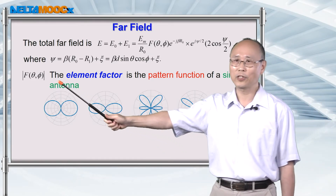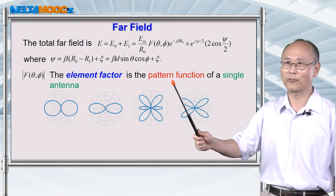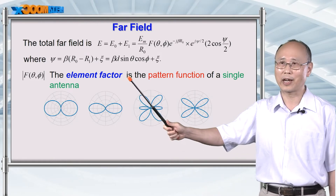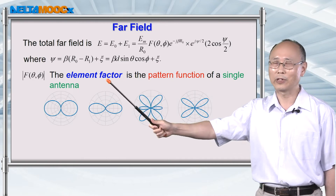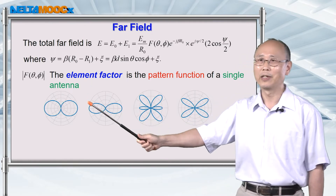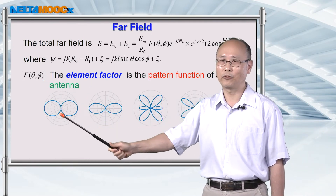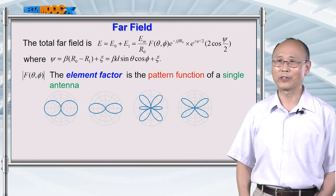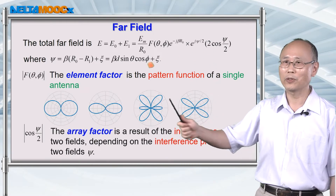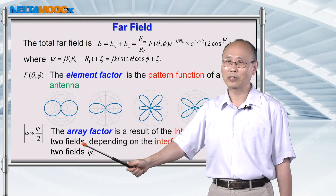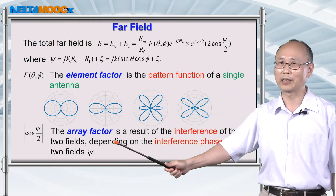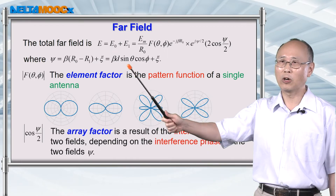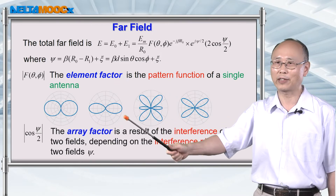The first term is what we call the antenna pattern function of a single antenna — we now call this the element factor, because there are two elements inside this double antenna. We have seen this antenna pattern before, coming from the interference of the currents from different parts of the linear antenna. The additional term is cosine(phi_c divided by 2), and we call this the array factor of this double antenna. This is the result of the interference of the fields from the two antennas in the far zone. Overall, the antenna pattern is the multiplication of this element factor and array factor.